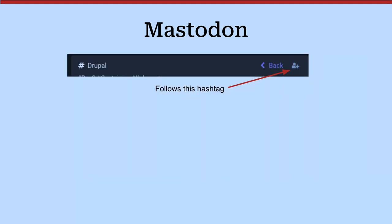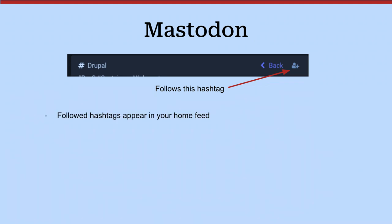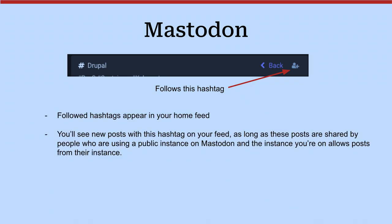You can search and follow things by hashtag — you search the Drupal hashtag in the search box and click that plus sign, and then your feed will be populated by posts with that hashtag. They appear in your home feed. This kind of goes back to the federation, so you're not going to see everything on Mastodon about Drupal — you're going to see all the stuff about Drupal from the other servers that your server is connected to.